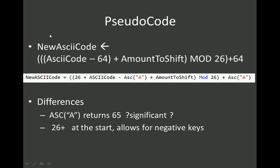Turning that process into pseudo code: my new ASCII code equals ((my old ASCII code minus 64) plus the shift amount) mod 26, making sure that's all bracketed, and then at the end I add 64. That is the basis of the code we have in VB.